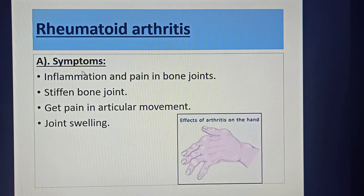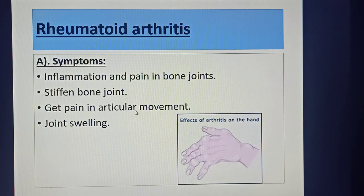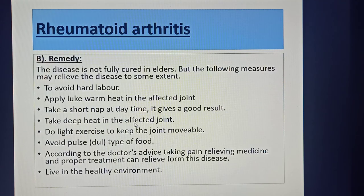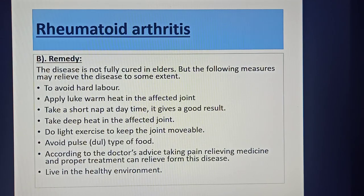The symptoms of rheumatoid arthritis are: inflammation and pain in the bone joints, stiffening of bone joints, pain during articular movement, and joint swelling. This figure indicates a rheumatoid arthritis bone joint. The disease is not fully cured in elders, but the following measures may relieve the disease to some extent.